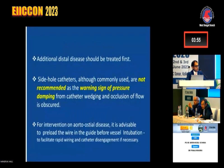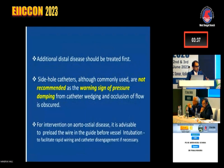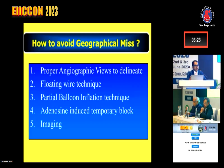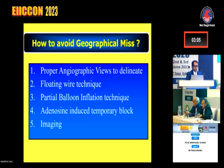If there is a distal lesion, always treat the distal disease first. Side-hook catheters we no longer use because they give a false sense of security. For intervention on a very tight aorto-ostial lesion, it is better to preload the wire when inserting the guide, because sometimes the patient may develop ventricular tachycardia or hypotension. Also, a very important step is to avoid geographical miss — sometimes placing the stent exactly at the ostium is difficult. Best is to take proper angiographic views.